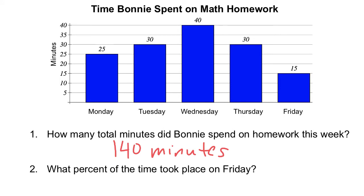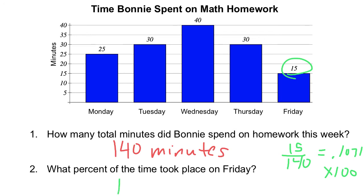The next thing we're going to do is try to figure out what percent of that time took place on Friday. What we're going to do is take the number of minutes we had for Friday and write that in a ratio with the total number of minutes, which was 140. Then we convert that into a decimal — we get 0.1071. The final step is to multiply that by 100, giving us 10.71 percent. So she spent a little bit over 10 percent of her time working on her homework on Friday.